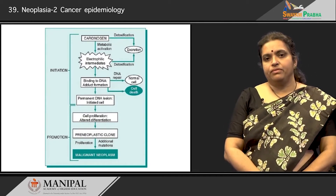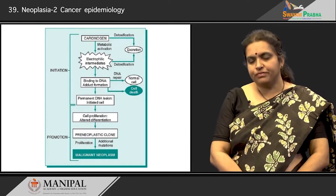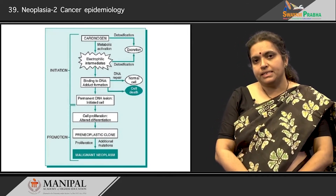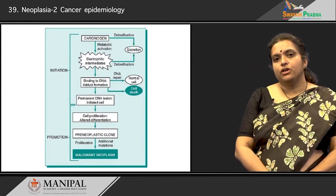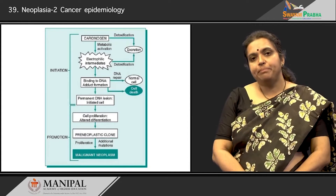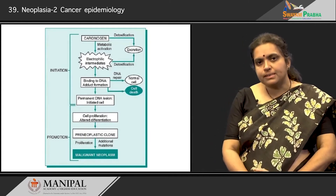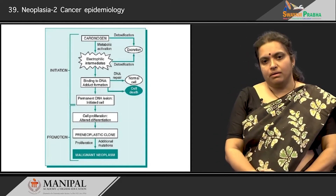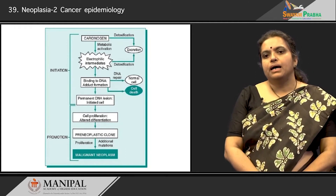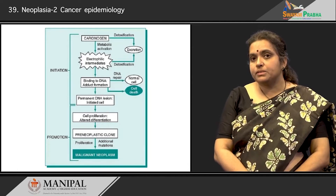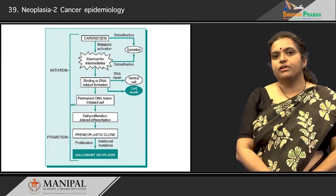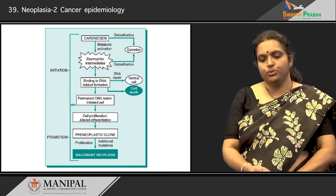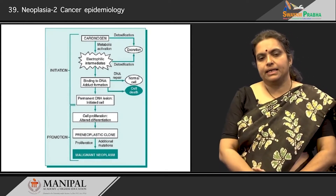Normally, during our lifetime all of us are exposed to a whole lot of carcinogens, but not all of us develop these cancers. This is because the cell has DNA repair mechanisms that are constantly working and trying to repair all the DNA damages that could have occurred due to initiation processes. Only when these DNA repair mechanisms are overwhelmed by a large number of chemical carcinogens do they fail, and then permanent DNA lesions are passed on to daughter cells, ultimately forming the cancer cell.